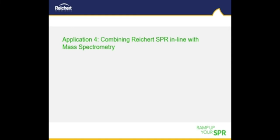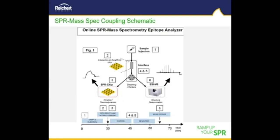Our final application is another example of how SPR can be used in combination with mass spectrometry. This pairing allows the user to study kinetics and also to determine the identity of what is binding in a mixture. The SPR used is our automated two-channel model, which can be coupled to any mass spectrometer via a developed interface. Work on the interface has been carried out by Professor Michael Krasvilnikov's group at the Steinbeis Center in Germany. The coupling schematic for this application shows the workflow for epitope and affinity analysis using an online SPR-MS analyzer.